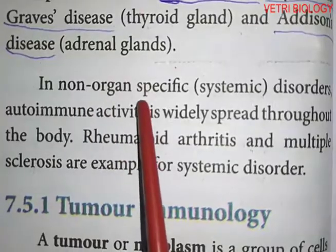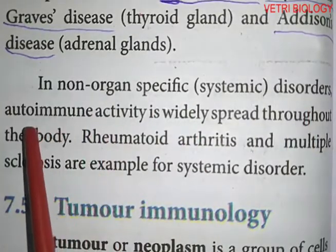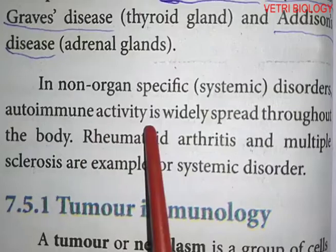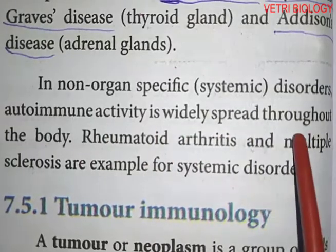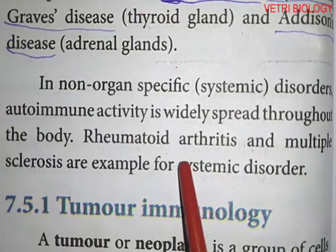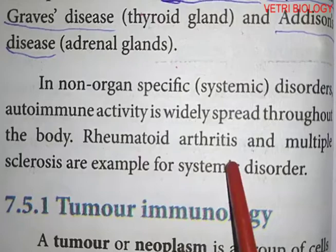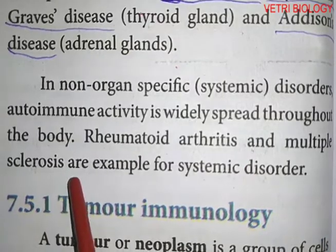In non-organ specific disorder, autoimmune activities are widely spread throughout the body. Examples include rheumatoid arthritis and multiple sclerosis.